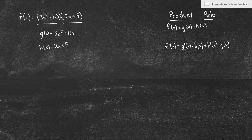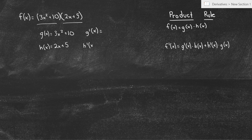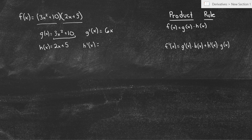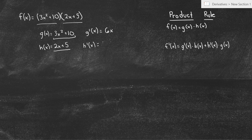The product rule says f'(x) = the derivative of g(x) times h(x), plus the derivative of h(x) times g(x). I'll need g'(x) and h'(x), so let's find those now. For g'(x), I take the derivative of 3x² + 10: bring the 2 out front, 2 times 3 is 6, giving 6x, and the derivative of the constant 10 is 0. So g'(x) = 6x. For h'(x), the derivative of 2x is just 2, and derivative of 5 is 0, so h'(x) = 2. Now we're ready to plug into the formula.